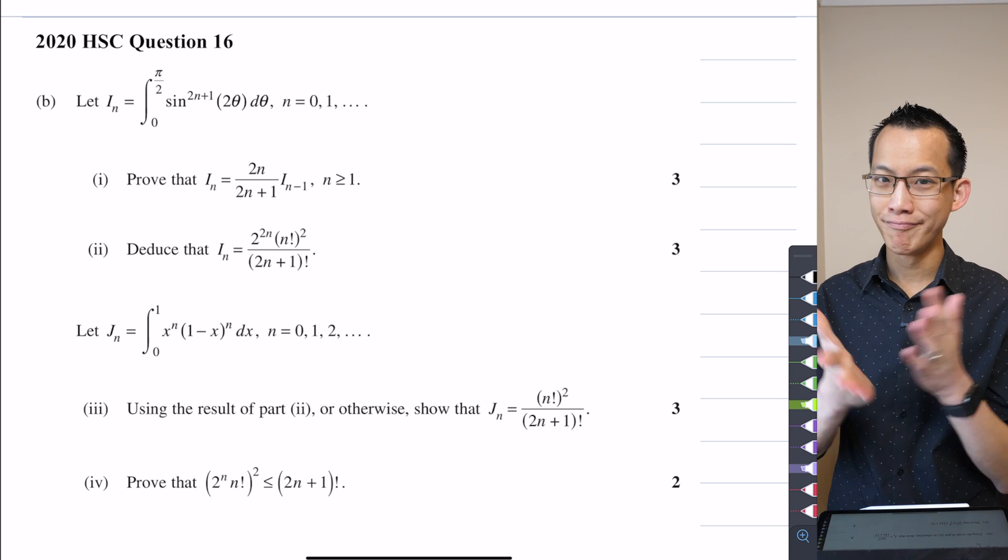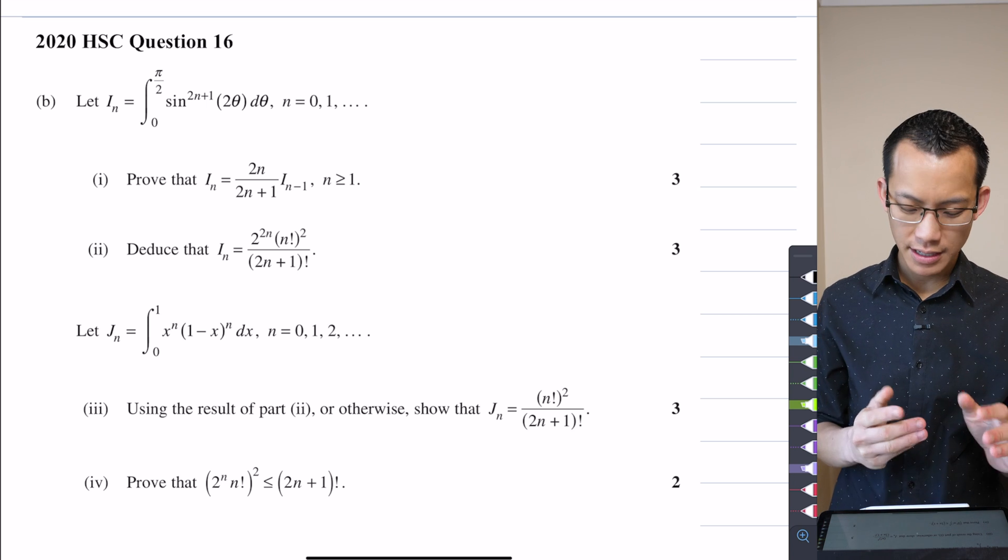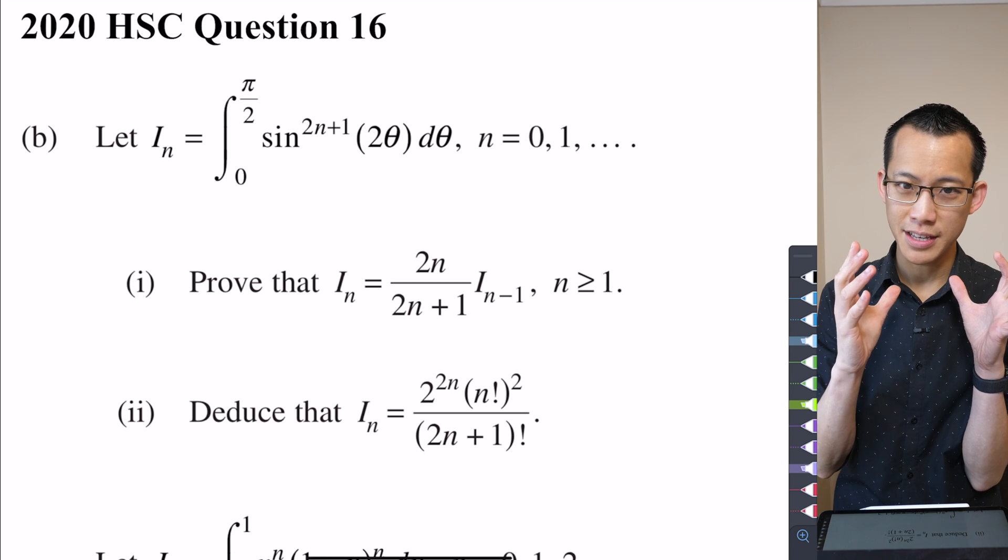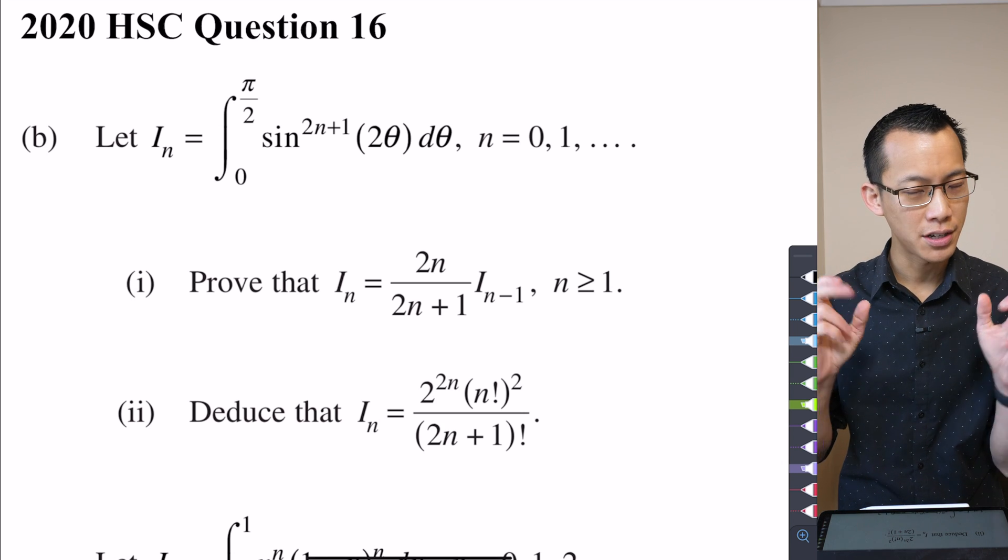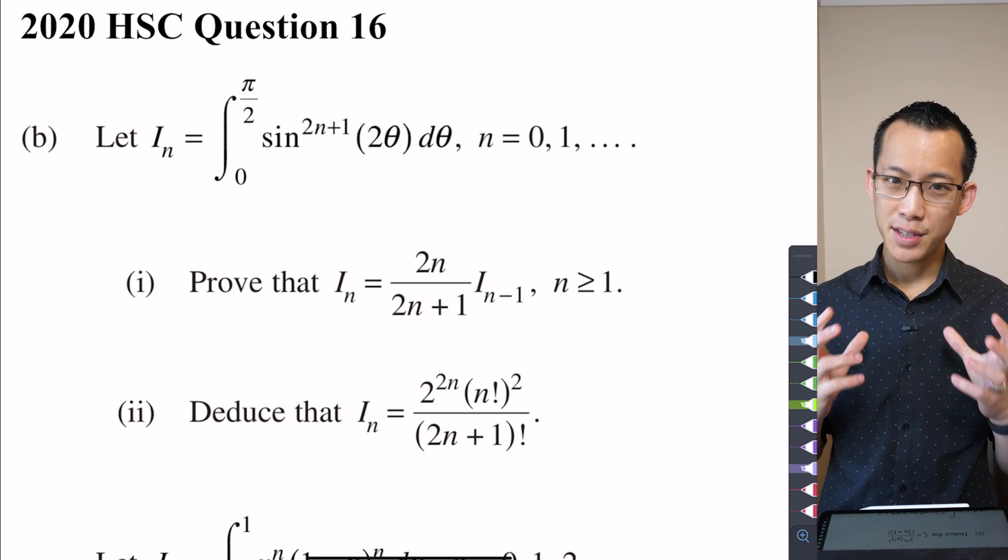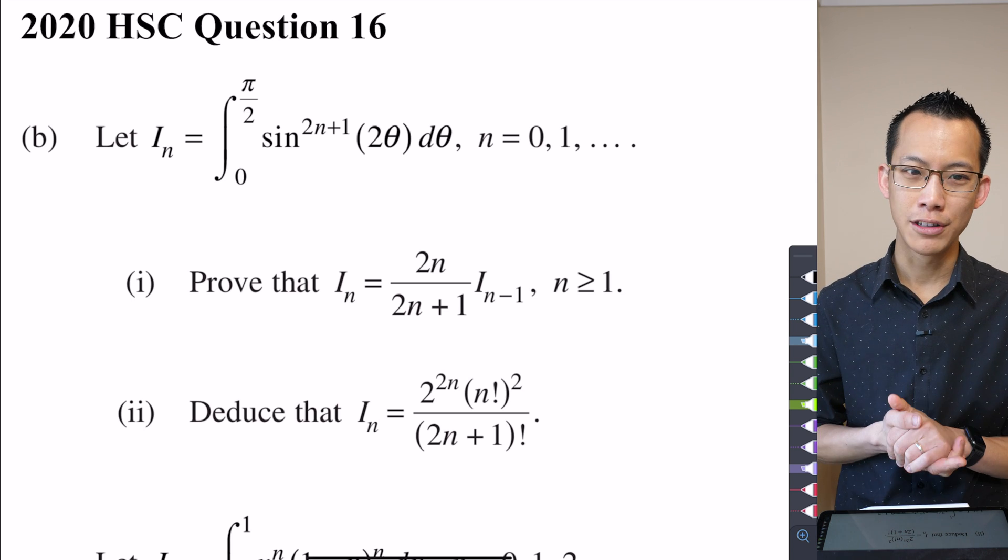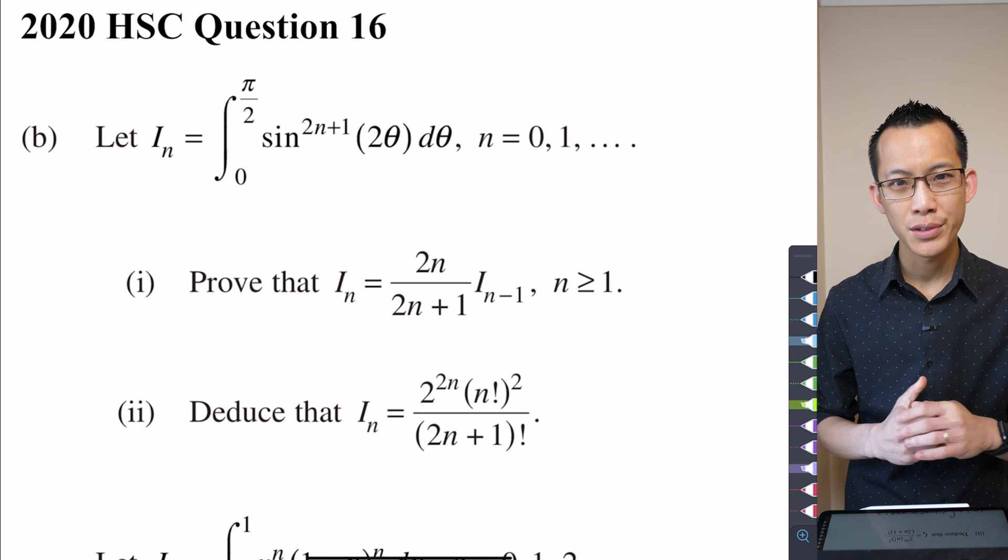But I already mentioned, it's clearly an integration question. It's not just an integration question. If you have a look, even in part one, the subset of further integration within extension two that we're looking at is a recurrence relation. Can you see it there in part one? You've got the integral i_n,